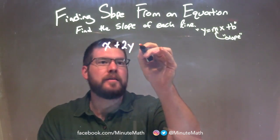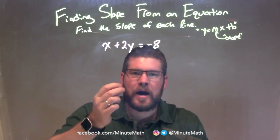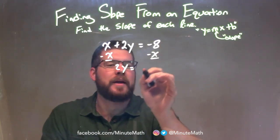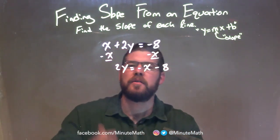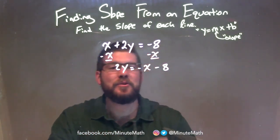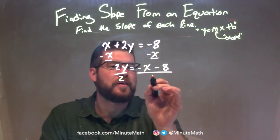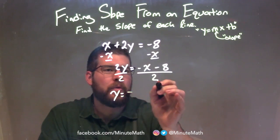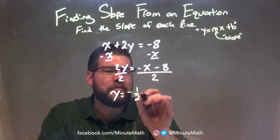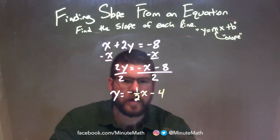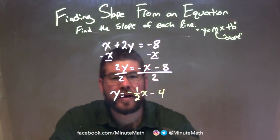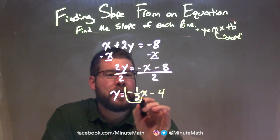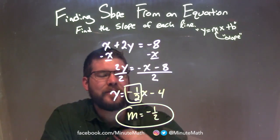x plus 2y equals negative 8. I need to isolate y, so I subtract x from both sides. Now we have 2y equals negative x minus 8. My last step to get y by itself is to divide both sides by 2. I need to distribute that 2 to both parts. There's an imaginary 1 in front of x, so we have negative 1 half x, minus 8 divided by 2, which is 4. So we have y equals negative 1 half x minus 4. Now in slope-intercept form, we can see the m value is negative 1 half — right in front of the x. So m equals negative 1 half. That is our final answer and our slope.